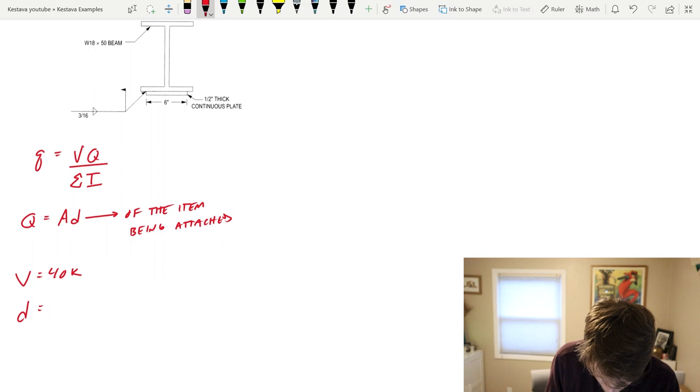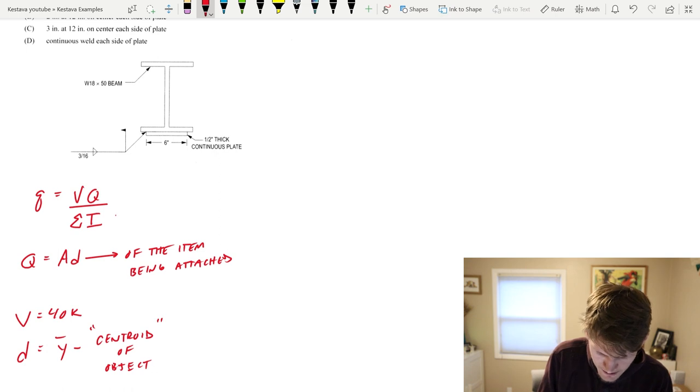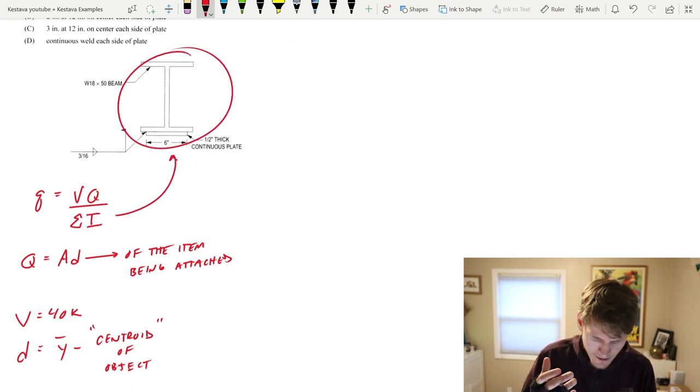D is the following equation. I call it y bar minus the centroid of the object being attached, and summation I is the moment of inertia for your entire system. So the wide flange and the plate in this instance. We need both of those combined into one for one total moment of inertia.